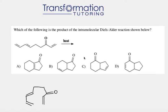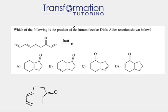Which of the following is the product of the intramolecular Diels-Alder reaction shown below? This molecule looks pretty complicated, but we can notice that there is a diene and dienophile inside of it.